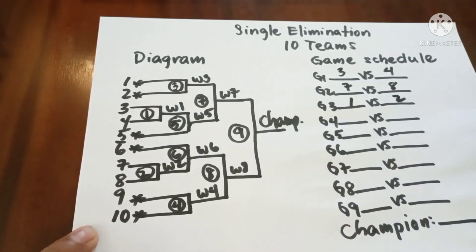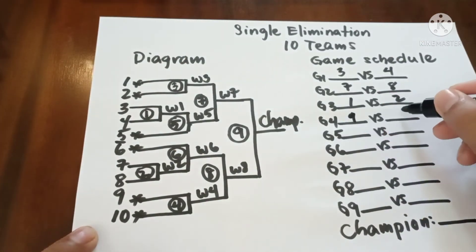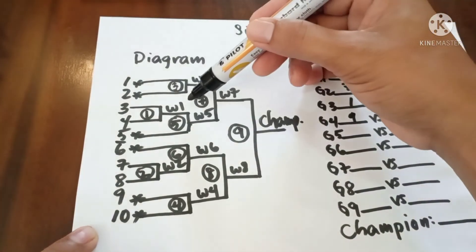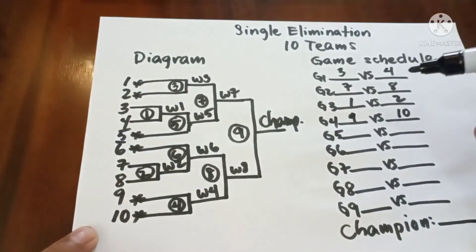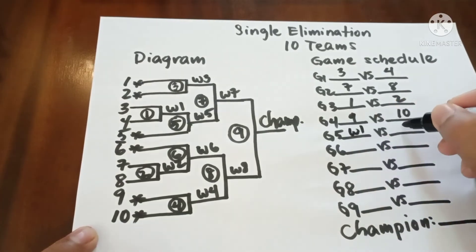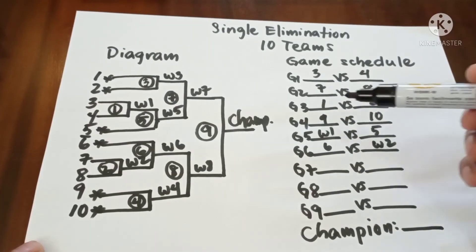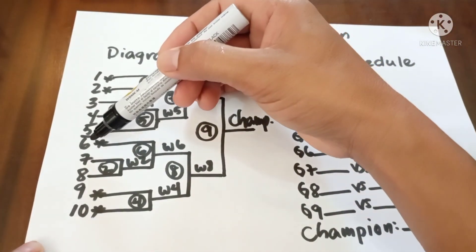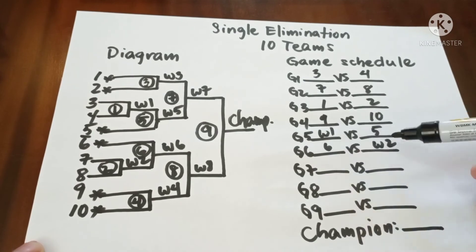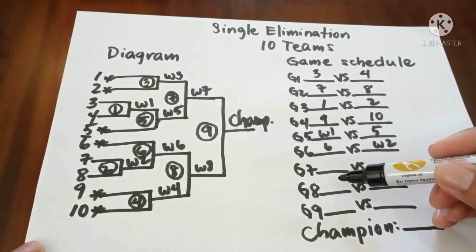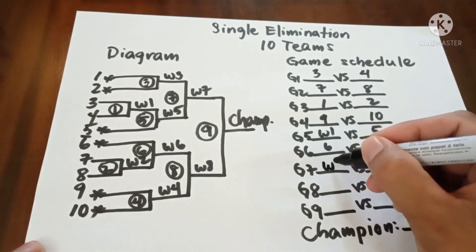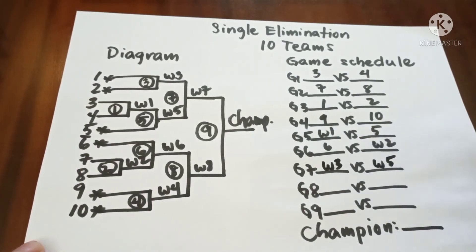In game 4, we have 9 versus 10. In game 5, we have winner 1 versus team 5, winner 1 versus 5. In game 6, we have team 6 versus winner 2. In game 7, we have winner 3 versus winner 5.